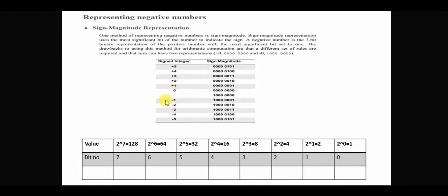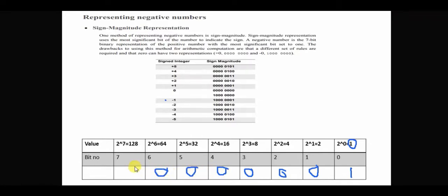Let's take minus 1 as an example. We have a place for plus 1. The lowest result is 0. Let's try to see how the data is given for minus 1 on the chart, and how the sign-magnitude representation works. If the last bit is 7, that becomes 1.